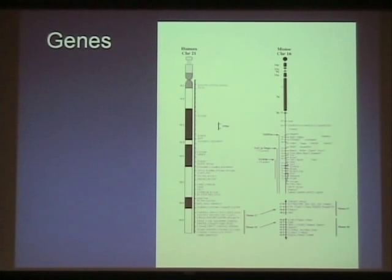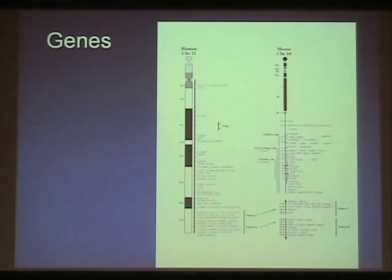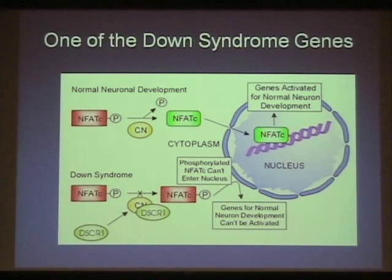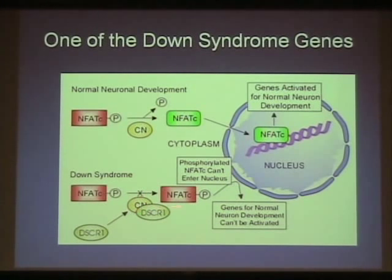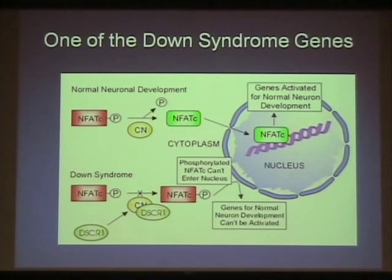There are many genes on chromosome 21 — researchers have identified all of them and are trying to sort out what they do. One gene important for brain and nerve development has a typical pathway, but in Down syndrome extra gene material blocks this process, making a particular enzyme ineffective, preventing a compound from entering the nucleus and blocking some normal development.